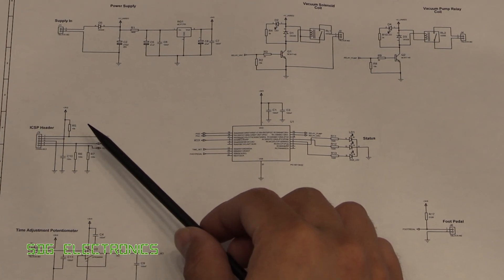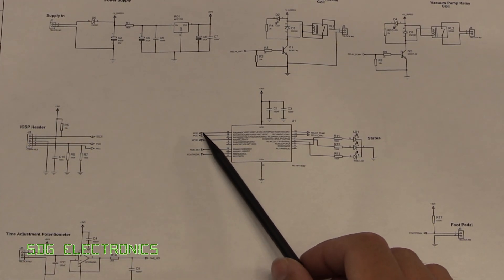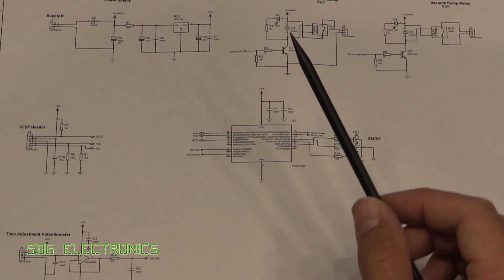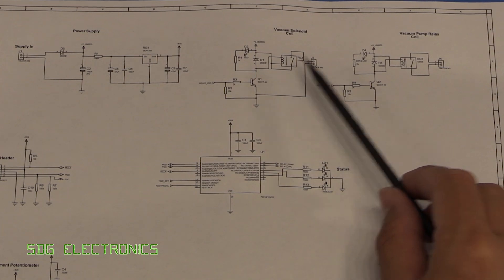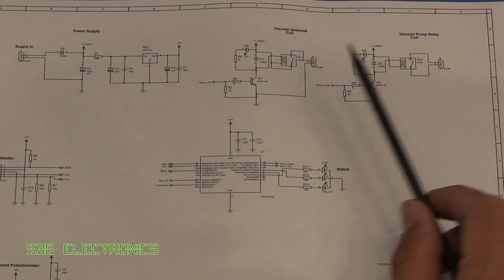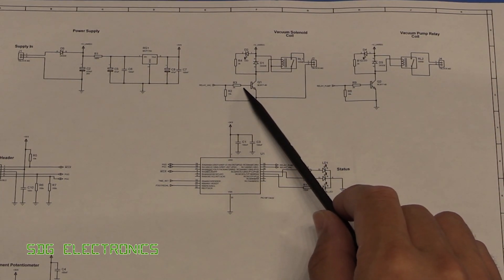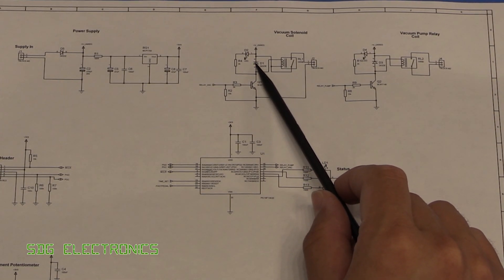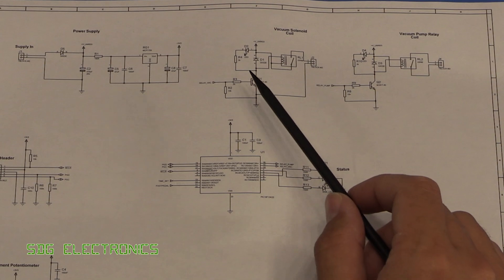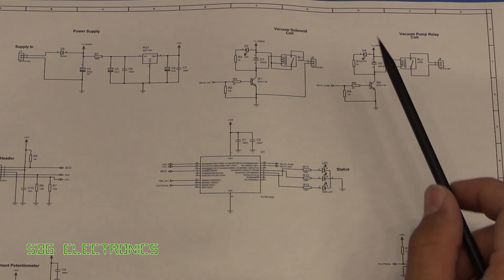So there's not much going on here. Basically we've got the in-circuit programming header which just connects to the memory clear lines PGC and PGD. And then we've got the two outputs here for the solenoid and also for the vacuum pump. So this is just two open collector transistors driving the coil with a reverse protection diode across it and then we've also got an LED on the board just to indicate the status of those relays.